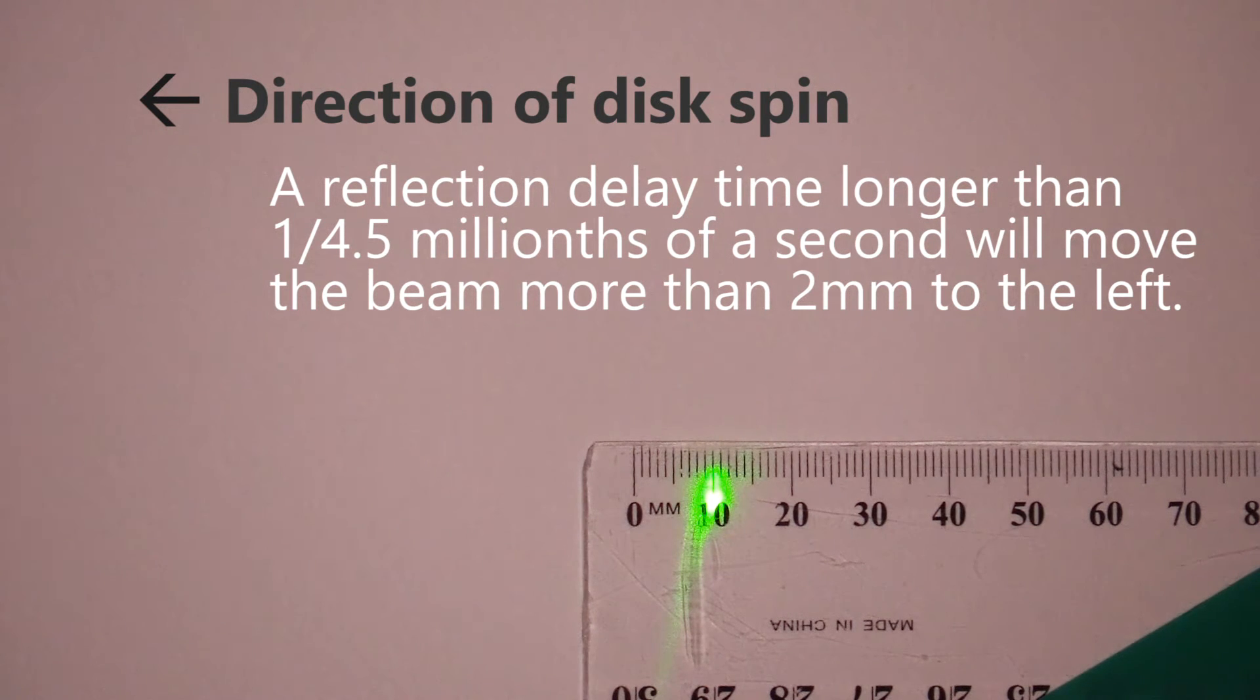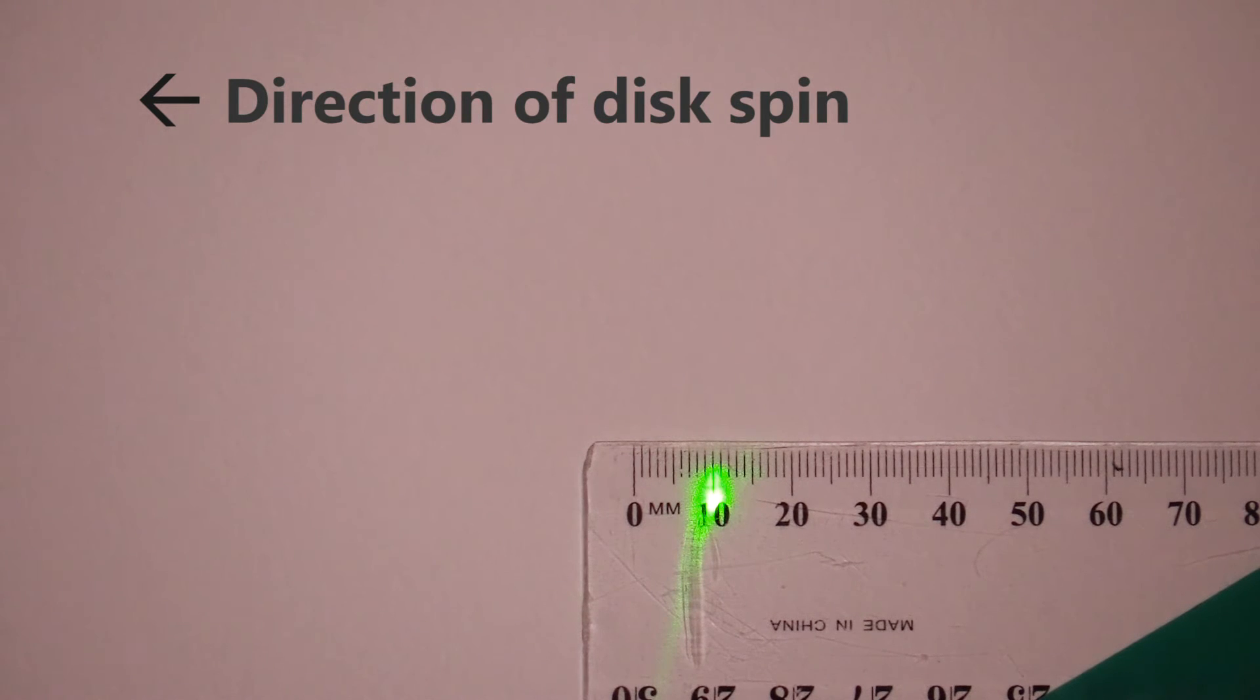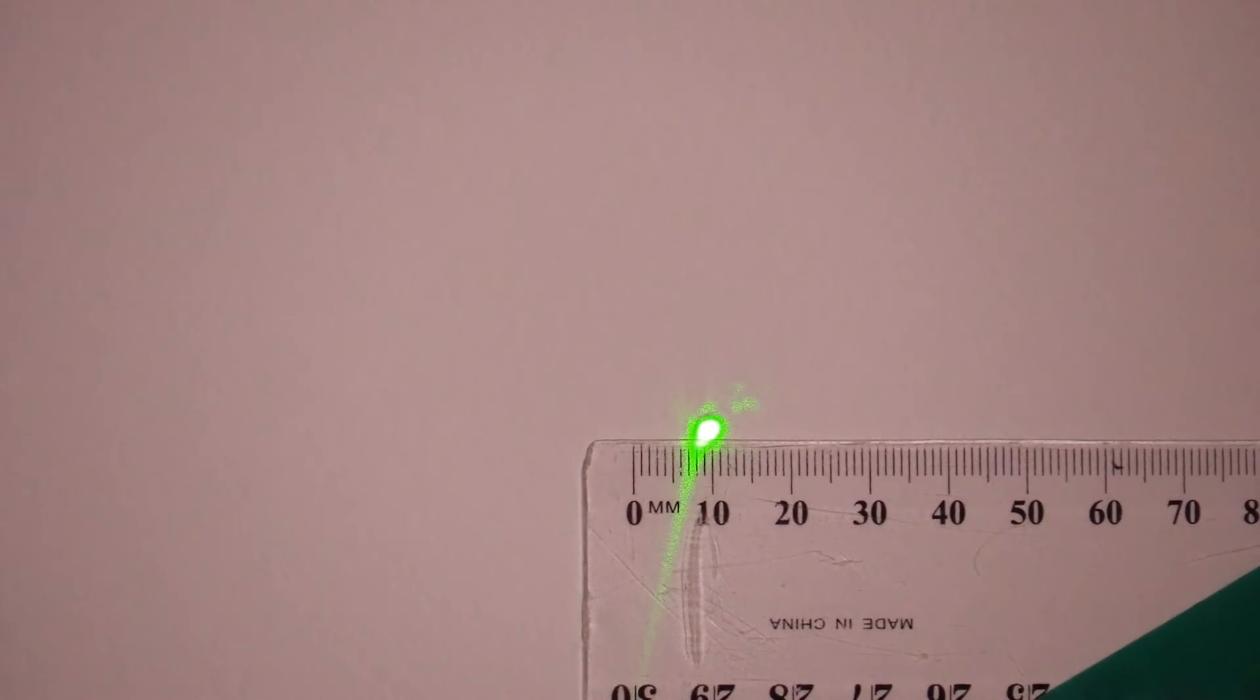So there is no beam movement to the left. However there is a vertical downwards movement when the hard drive is running. And I suspect this movement is due to movement of the fluid dynamic bearings, which hold the hard drive platter in place, when the hard drive is operational. So the reflection delay time is shorter than 0.04 millionth of a second, or 222 nanoseconds. That's the limit of what I can measure here.